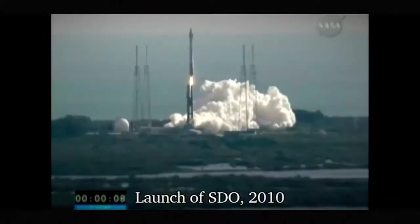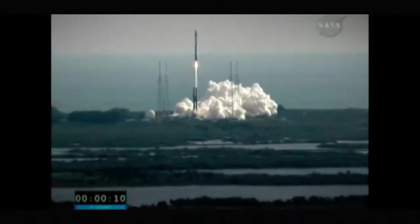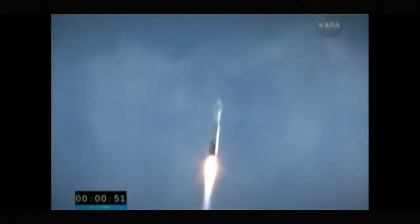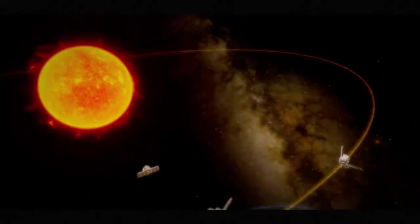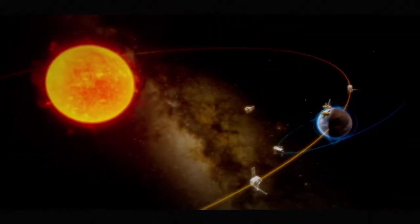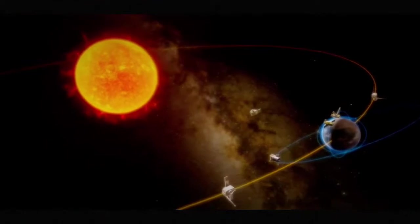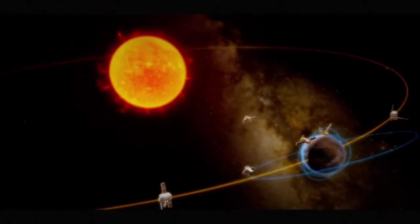The field of solar observation is entering an unprecedented golden age. In the last decade, countries around the world have launched solar observation satellites one after another. There are now more satellites than ever observing the sun from space, with six currently in orbit.